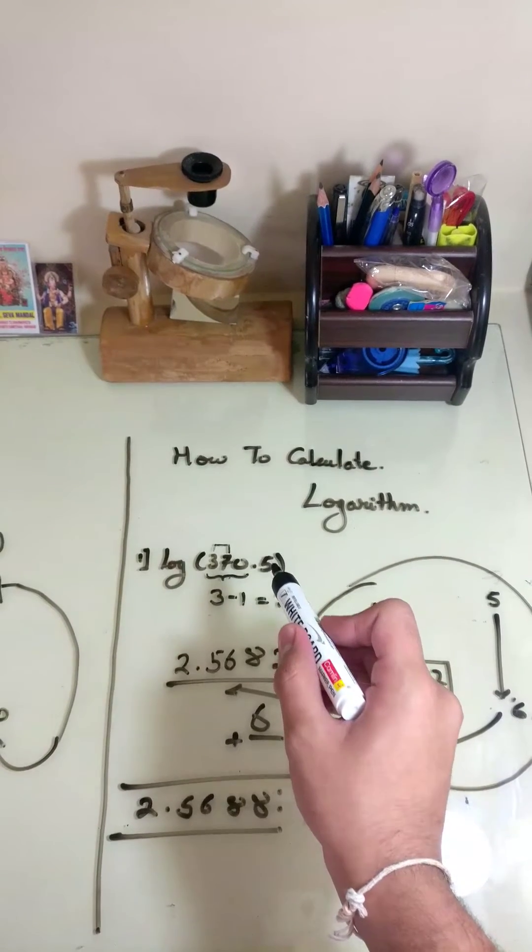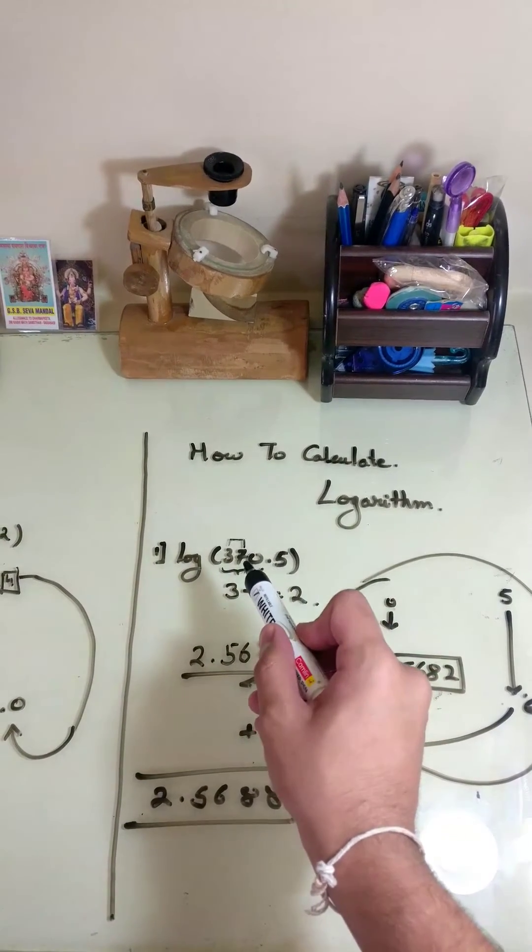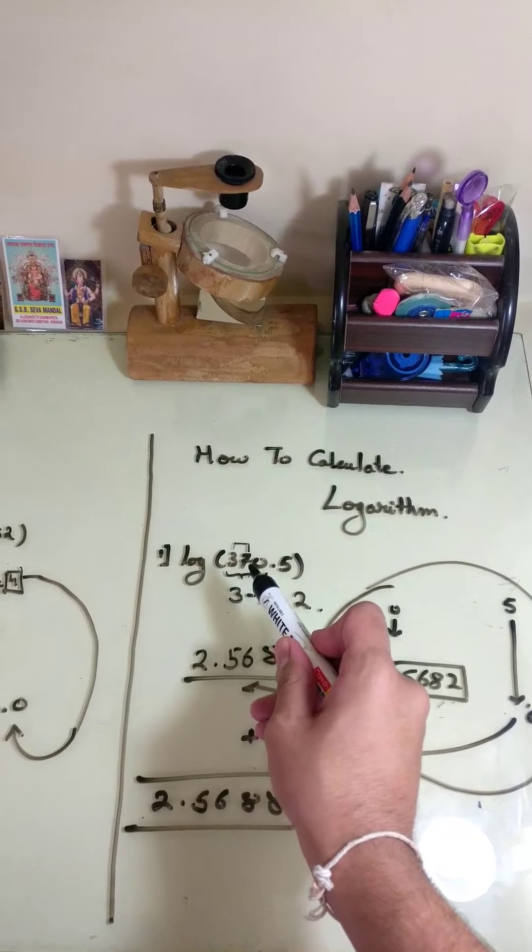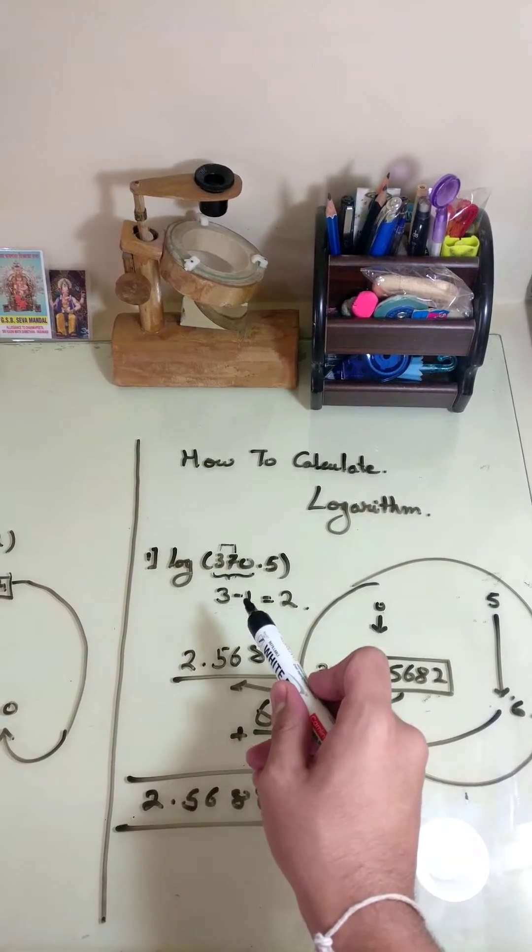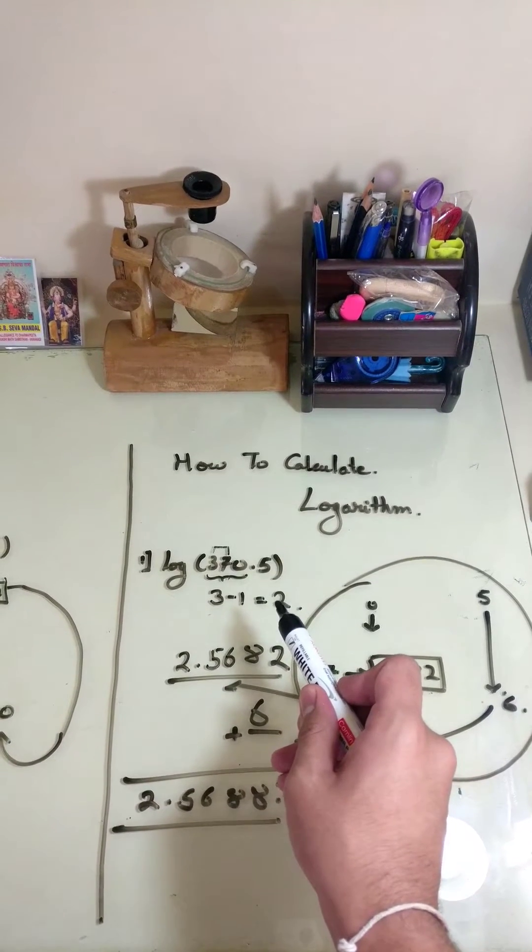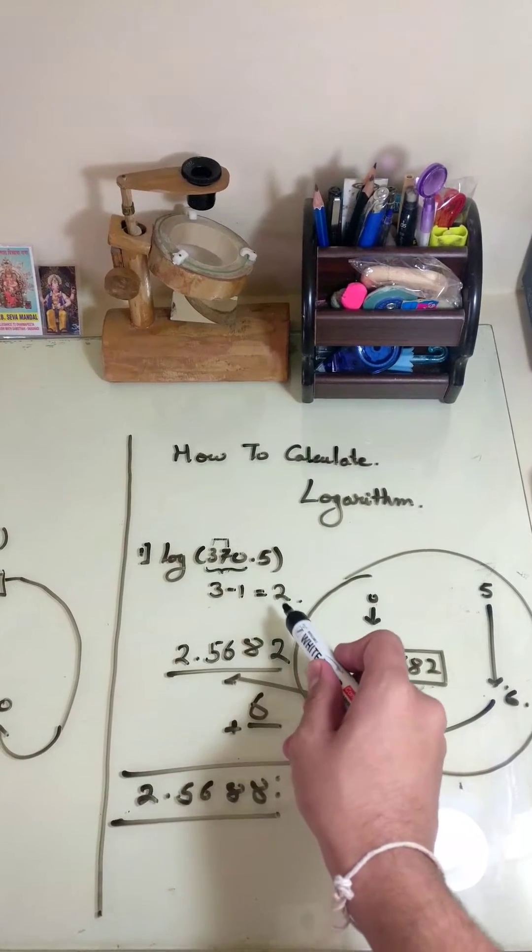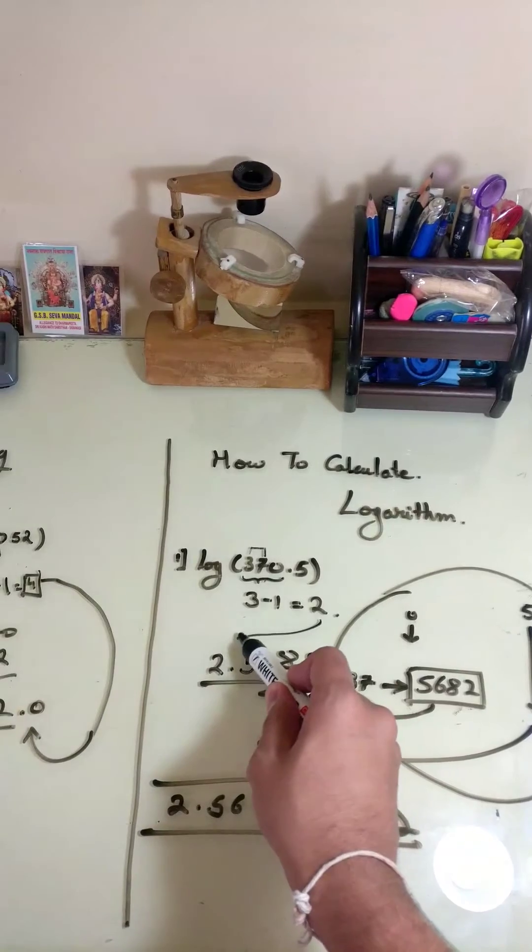First of all, count the number of digits before the decimal place, that is 3. Then subtract 1 from it, which gives us 2. Write this 2 aside for a time.